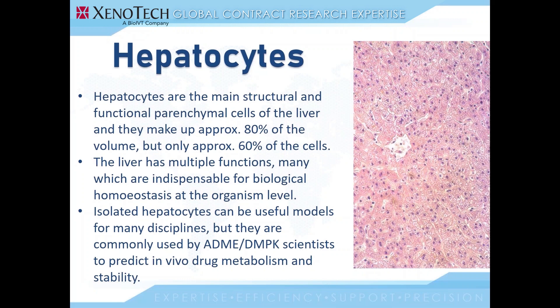Volume-wise, hepatocytes make up about 80% of the liver's volume but only represent approximately 60% of the total cell population, which basically means they're big. Because of their size and other physical properties, we can take advantage of these characteristics and purify them away from other cell types in the liver.